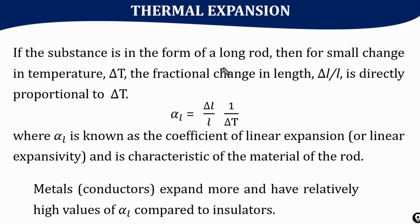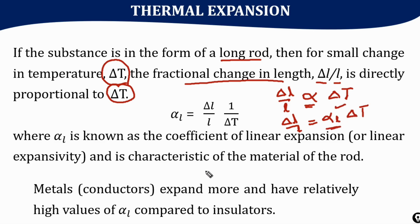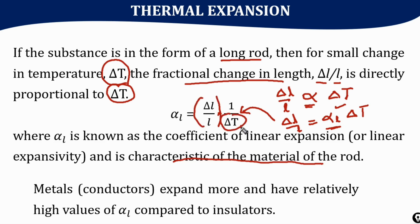When we consider a long rod with a small change in temperature delta T, the fractional change in length — represented as the change in length divided by length — is directly proportional to the change in temperature. The proportionality constant is represented as alpha L. So the expression becomes: delta L divided by L is equal to alpha L into delta T. We can define alpha L as the ratio of fractional change in length to the change in temperature. Its SI unit is per Kelvin.